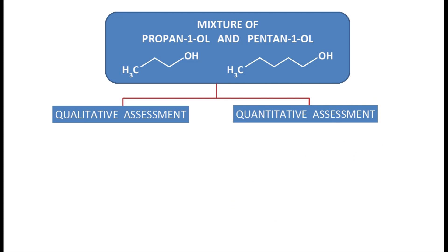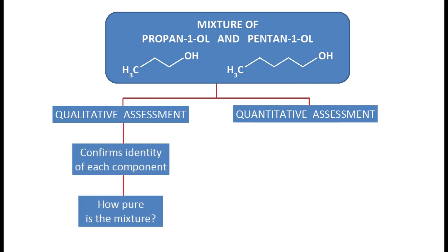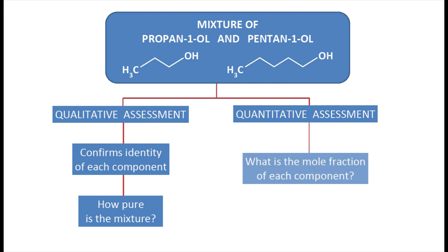This video focuses on how to use the GC, but looking at this diagram we can see just how useful GC analysis can be to the organic chemist. For any mixture of compounds — and indeed for this mixture of two alcohols — GC can be used for both qualitative and quantitative assessments. Qualitatively, we can confirm the identity of each component and distinguish it from the other, and also tell if the mixture contains any impurities. Quantitatively, we can determine the relative amount of each component in terms of mole fraction or mole percent.